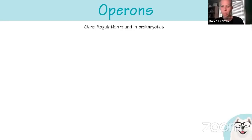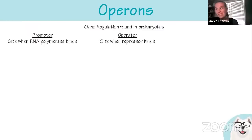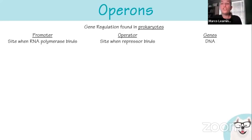Operons are how prokaryotes regulate genes. Within an operon there are three parts: the promoter (where RNA polymerase binds), the operator (where the repressor binds), and the gene (all the DNA it controls). The cool thing about prokaryotes is all genes that need to be regulated together are placed in these segments called operons. There are two types: repressible and inducible.